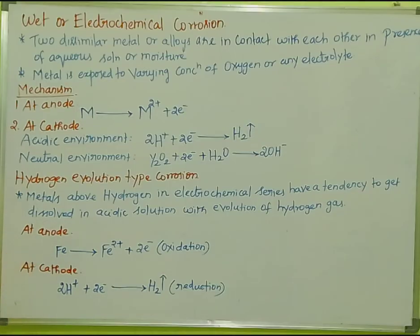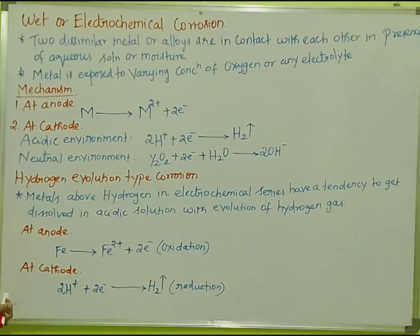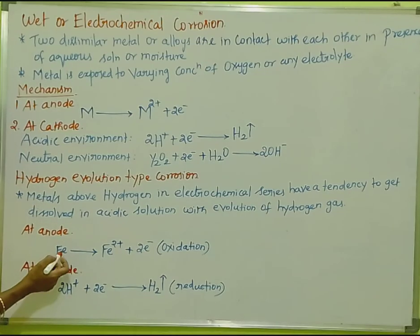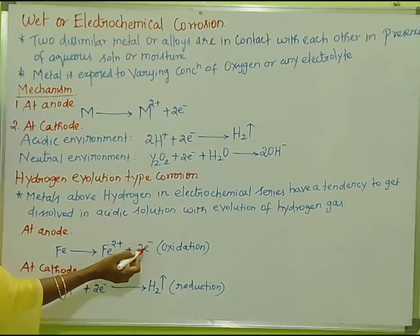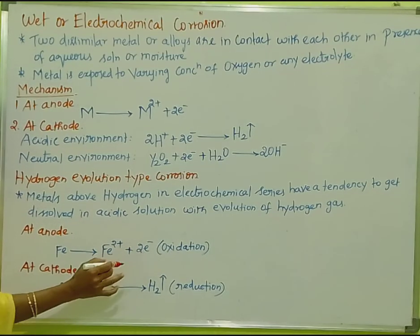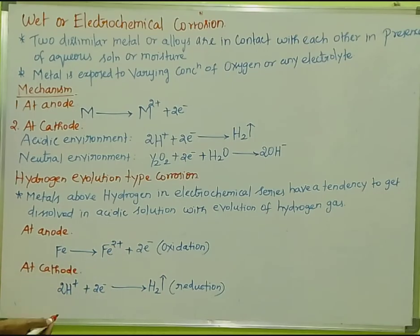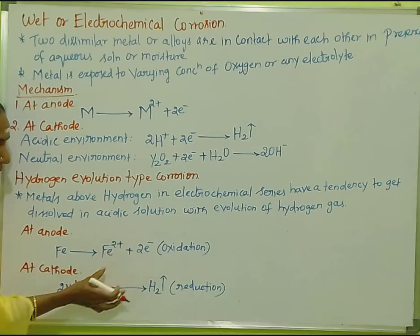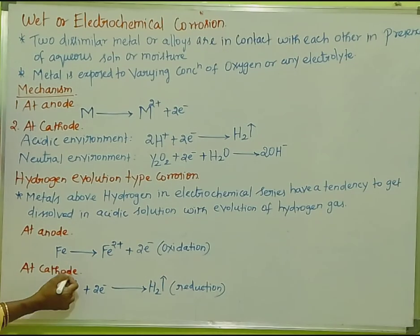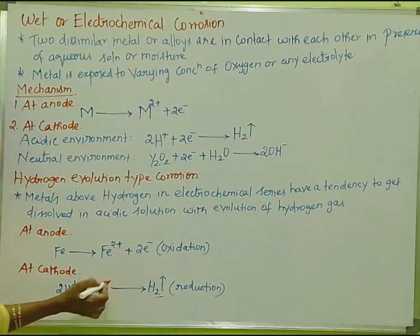For example, consider iron in HCl (an acidic solution). At the anode, oxidation occurs — iron loses electrons and is converted to Fe²⁺ ions. At the cathode, reduction occurs — electrons transferred from the anode allow hydrogen gas to evolve from the HCl solution.